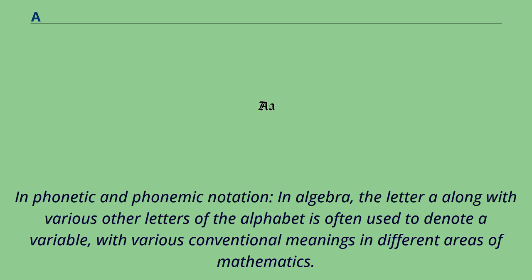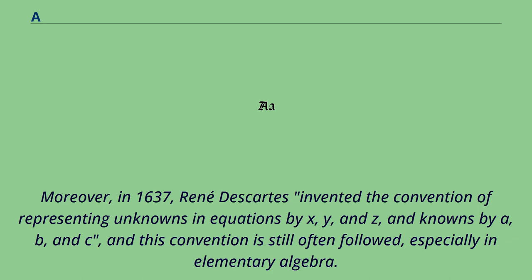In phonetic and phonemic notation, in algebra, the letter A along with various other letters of the alphabet is often used to denote a variable, with various conventional meanings in different areas of mathematics. Moreover, in 1637, René Descartes invented the convention of representing unknowns in equations by x, y, and z, and knowns by a, b, and c, and this convention is still often followed, especially in elementary algebra.